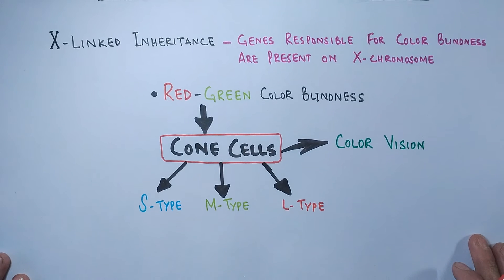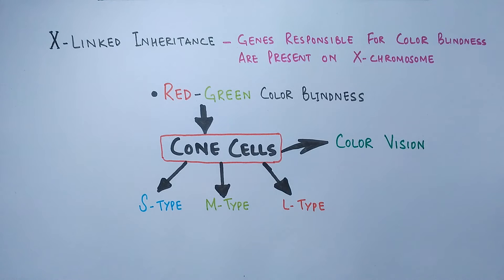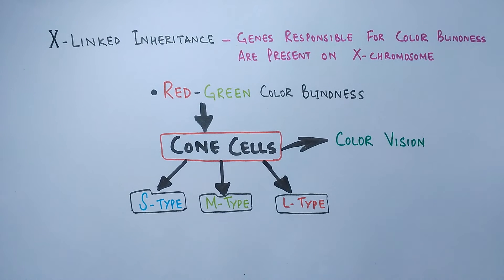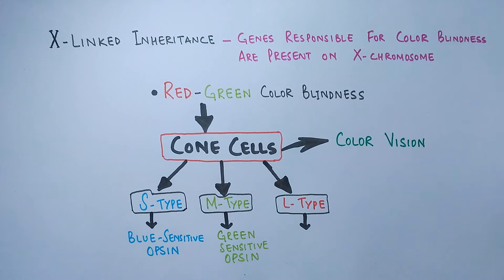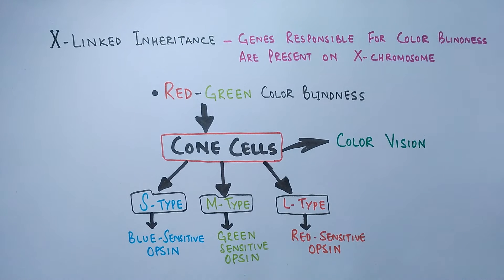S, M, and L correspond to the wavelengths they absorb: small, medium, and long wavelengths respectively. The S-type has a blue-light-sensitive opsin, the M-type has a green-sensitive opsin, and the L-type has a red-light-sensitive opsin — meaning these cone cells absorb blue, green, and red color wavelengths respectively in the spectrum.